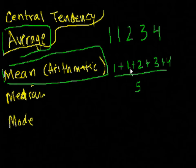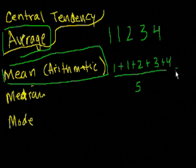1 plus 1 is 2, 2 plus 2 is 4, 4 plus 3 is 7, 7 plus 4 is 11. So this is equal to 11 over 5. That's what? That's 2 and 1 fifth, so that's equal to 2.2.